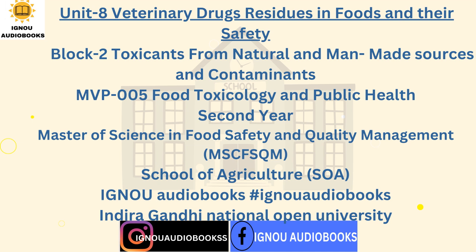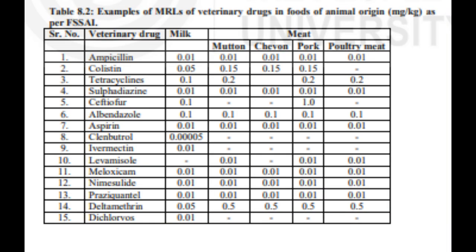Consumers may get exposed to veterinary drugs from different sources. For example, residues of a drug can be found in meat and milk as well as products prepared from them. A person will consume varied quantities of meat, milk, and their products. Therefore, possible dietary exposure to a drug is calculated on the basis of average consumption of various products. Thus, MRL for residues of a particular veterinary drug in a specific food item is established. Examples of some veterinary drugs and their MRLs are given in Table 8.2, showing MRLs of veterinary drugs in foods of animal origin (mg/kg) as per FSSAI.